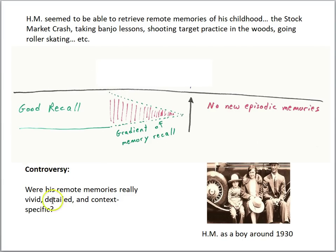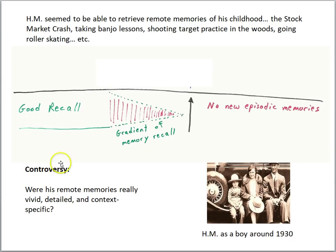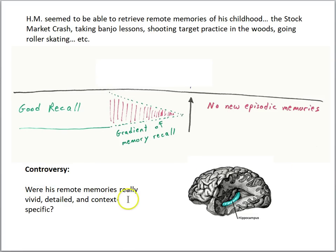There was a controversy about this. The question was: were his remote memories really vivid, detailed, and context-specific? Remember, those are the attributes of episodic memories — the kinds of memories where we are transported back into the past and reliving that moment in a vivid way. The controversy arose because the way HM described his childhood memories seemed to be less vivid and detailed, and more general and abstract — they just didn't have that reliving quality to them.